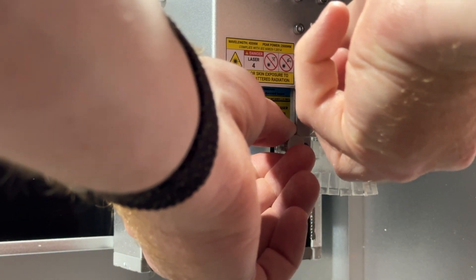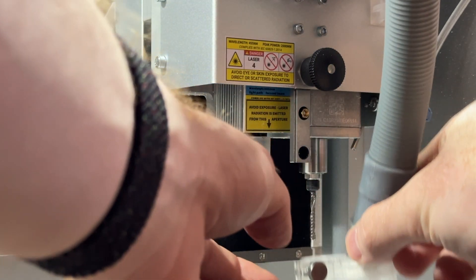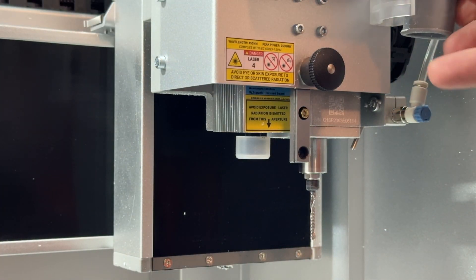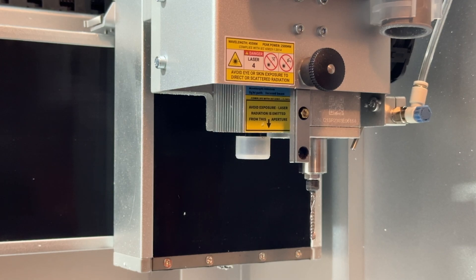We want to raise and lock the dust shoe bracket in the highest position, then remove the dust shoe entirely. You can then secure the dust collection hose in place by using the clip on the toolhead.